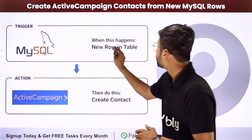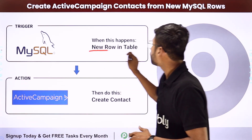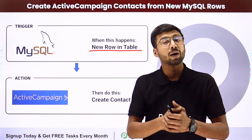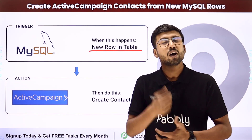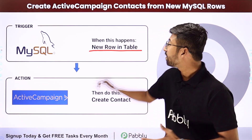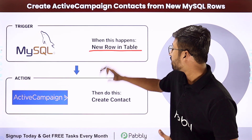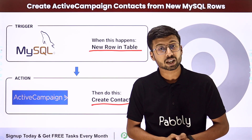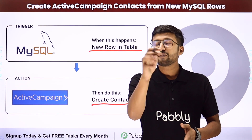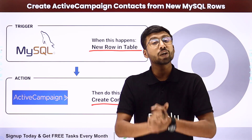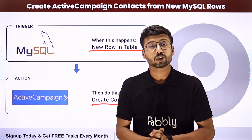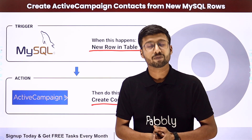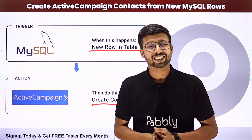Using this automation, whenever a new row is added with user details in our MySQL table, automatically a contact will be created in our ActiveCampaign account with the same details. If you want to know how to set up this automation, just come with me to my screen.